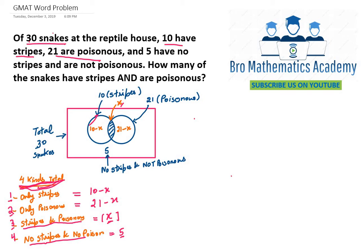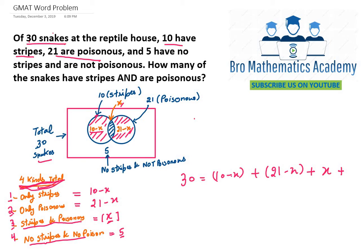We have redrawn the Venn diagram clearly: 10 minus X indicates only stripes (10 is the complete stripes circle), and 21 minus X indicates only poisonous. The total of all types is 30, so we have a straightforward equation: total equals only stripes (10 minus X) plus only poisonous (21 minus X) plus stripes and poison (X) plus no stripe and no poison (5).